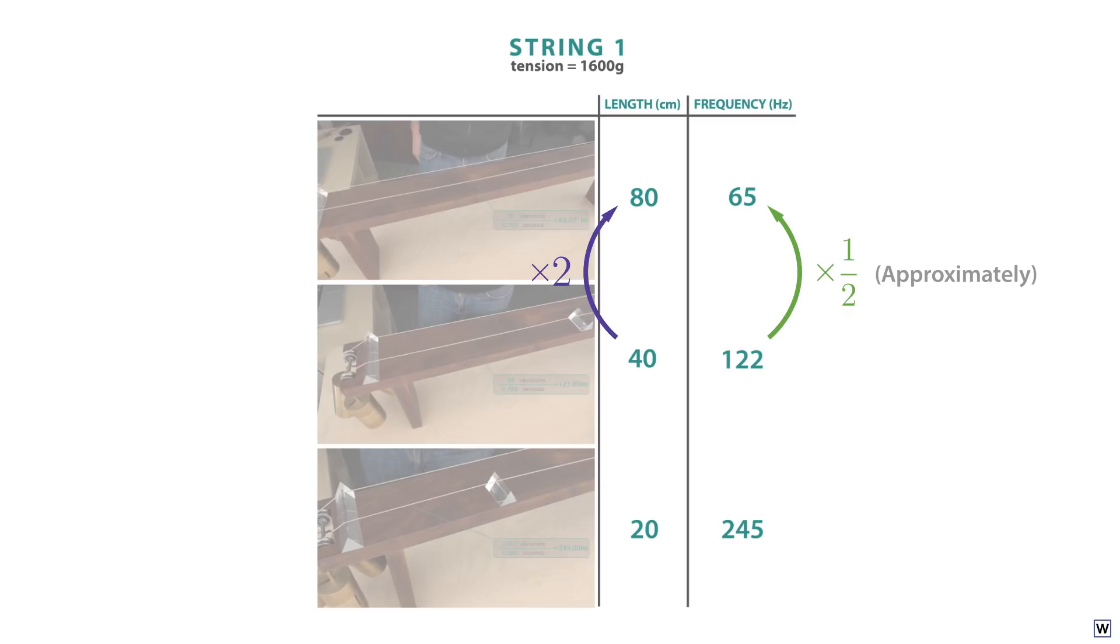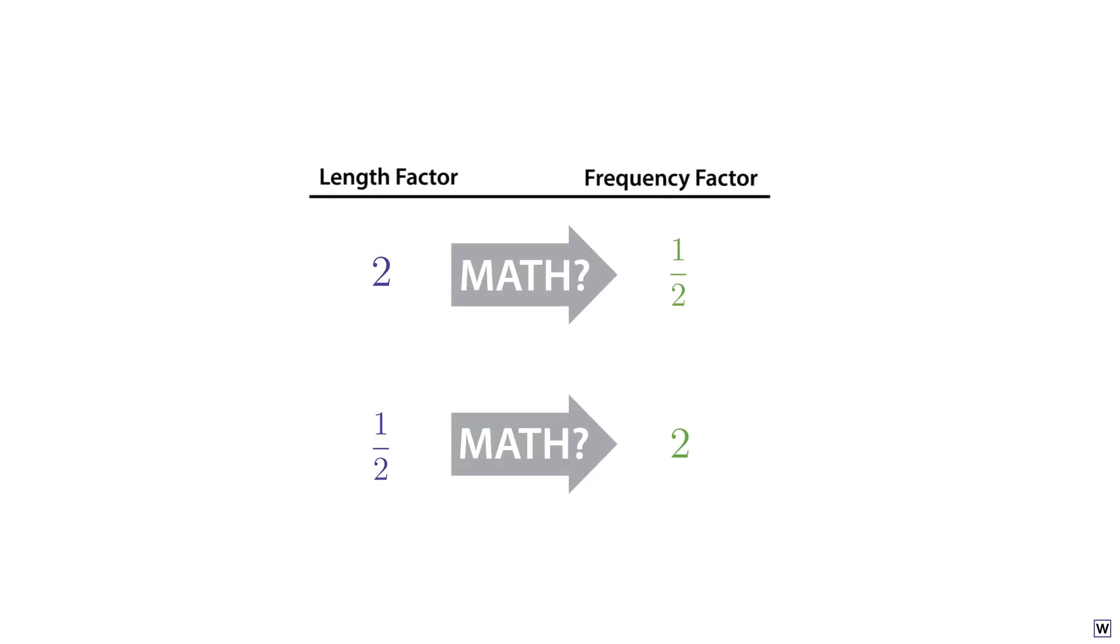And further, when the length of our string is cut in half, our frequency is approximately doubled. How can we capture this relationship mathematically? What mathematical relationship turns 2 into 1 half and 1 half into 2? The operation we need here is the inverse. 1 divided by our length factor gives us our frequency factor.